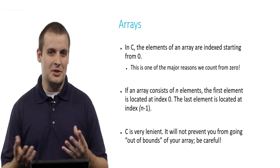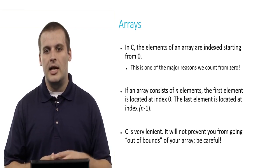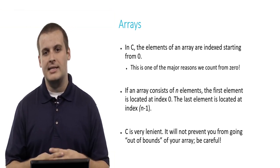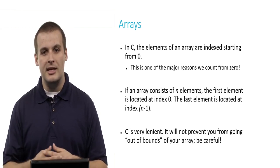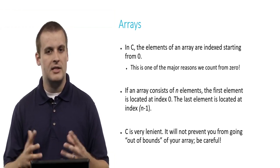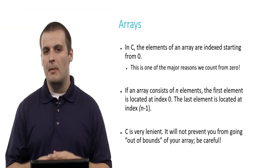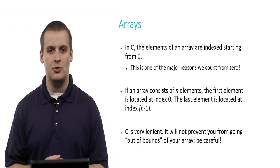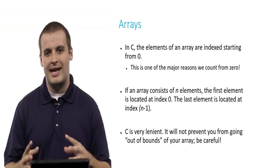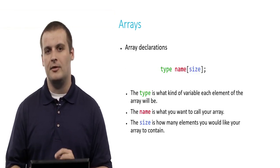Unfortunately, or fortunately depending on your perspective, C is very lenient here. It will not prevent you from going out of bounds of your array. You could access the minus 3 element or the 59th element of an array that only has 50 elements — it won't stop your program from compiling. But at runtime, you might encounter a dreaded segmentation fault if you access memory outside the bounds of what you asked your program to give you. So do be careful.